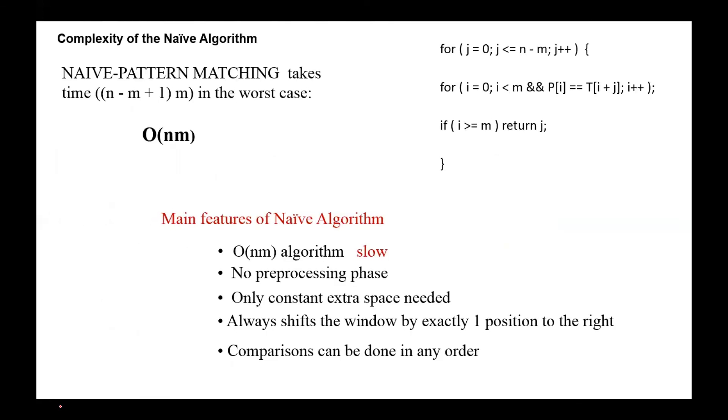The main features of naive algorithm: it's slow since the complexity is O(nm) and there are other methods that perform better, but it has the advantage that no preprocessing phase is required and no extra space is needed. Always shift the window by exactly one position to the right. Comparisons can be done in any order.